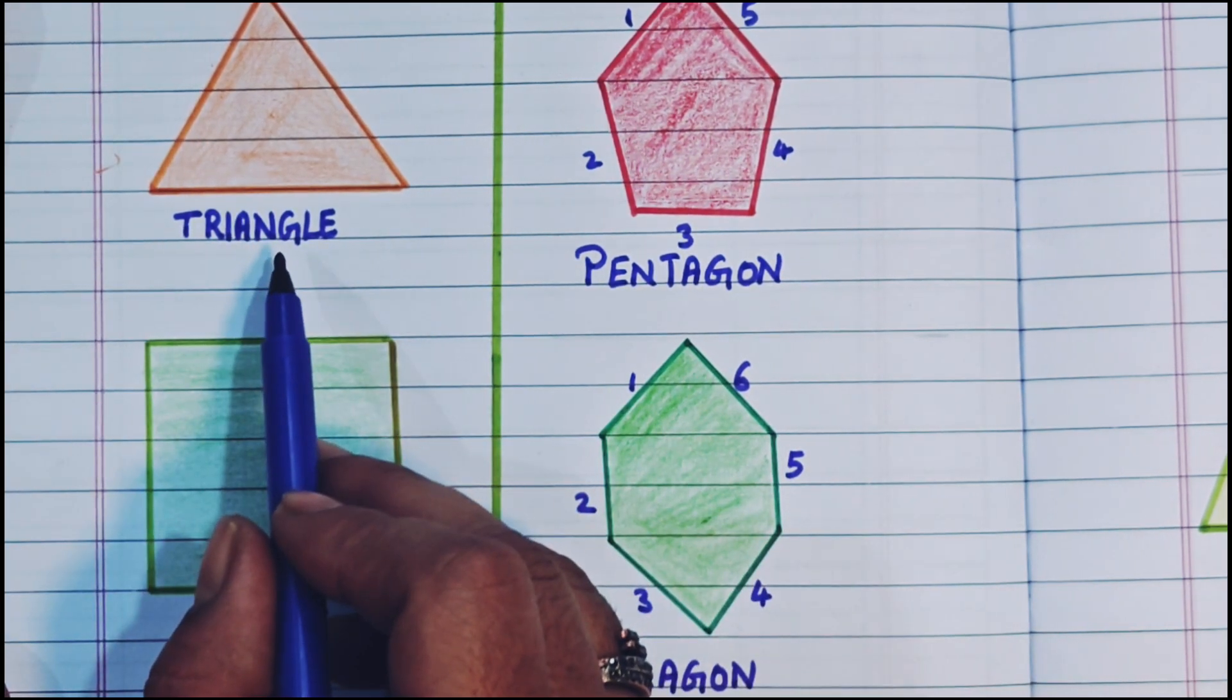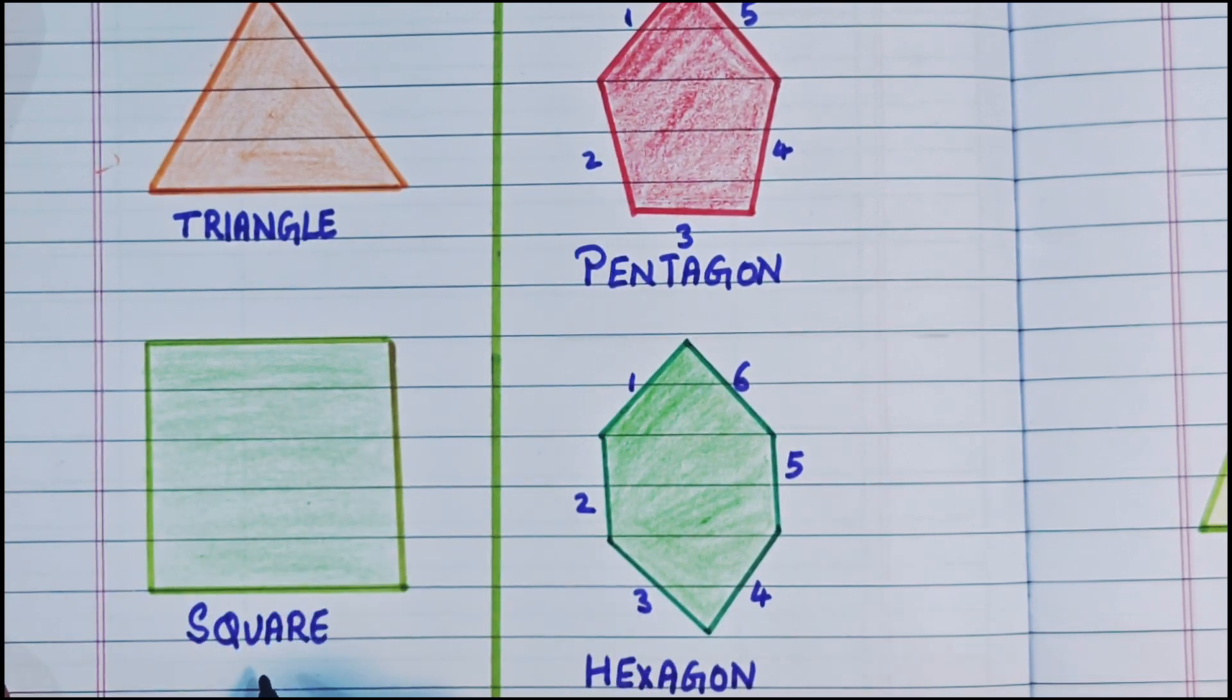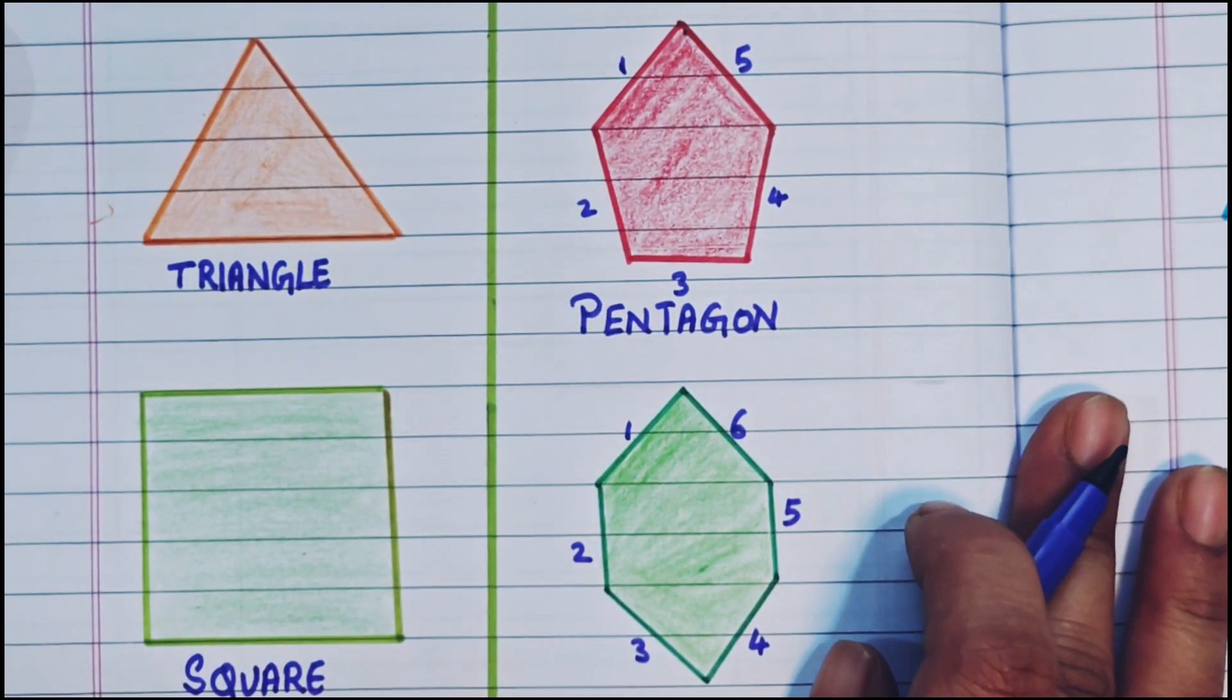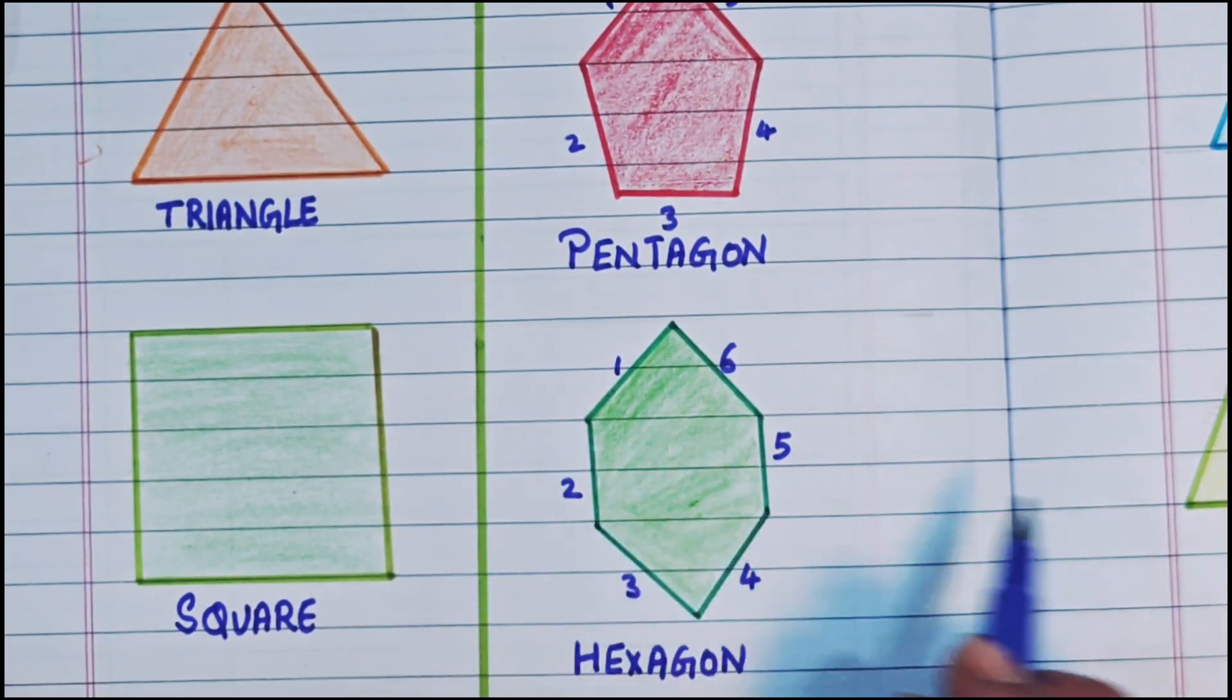So 3 sides is called a triangle. 4 sides, if all the 4 sides are equal, is called a square. 5 sides is called a pentagon, and 6 sides is called a hexagon.